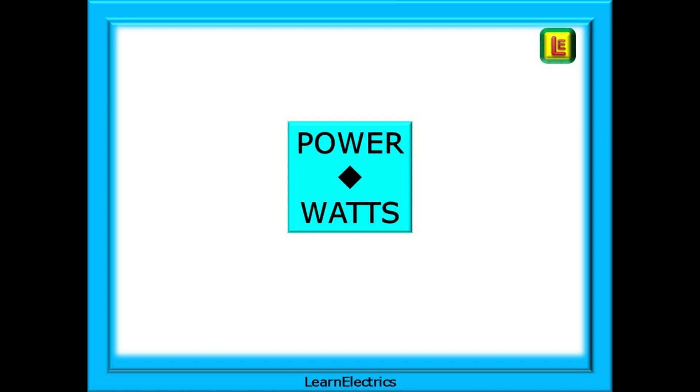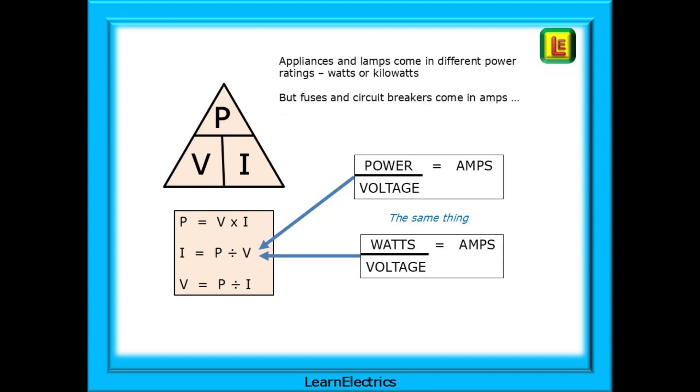How do these parallel circuits relate to real life circuits and the power or watts that we are used to using? Appliances and lamps come in different power ratings, watts or kilowatts, often stated on the rating plate or label for the equipment. But fuses and circuit breakers come in amps, so how do we find the amps value for the right fuse? This time, we will use power law, a simple formula similar to Ohm's law. For us, power and watts are the same thing. It just depends on what you want to call it.